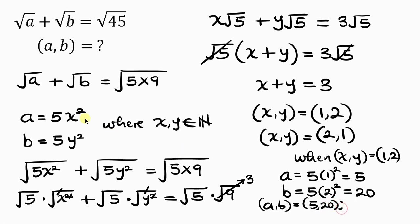Since the original expression is symmetric — swapping the positions of √a and √b gives the same result — b can also be 5 and a can be 20. So our final answers are: a = 5, b = 20, or a = 20, b = 5.